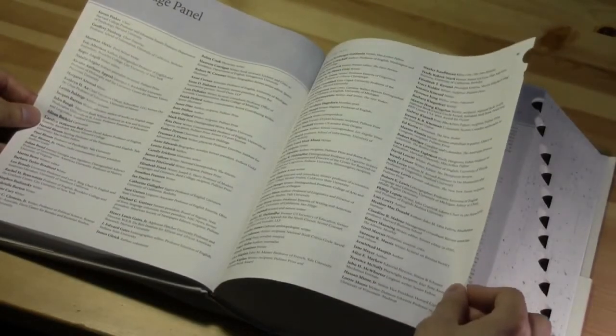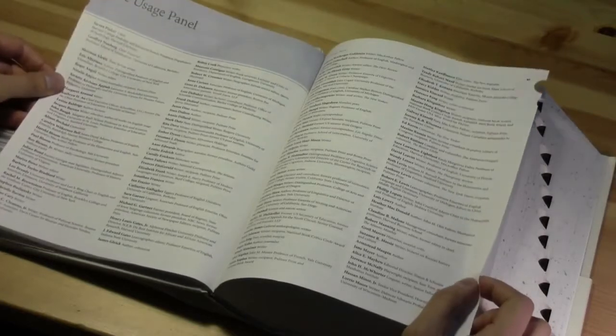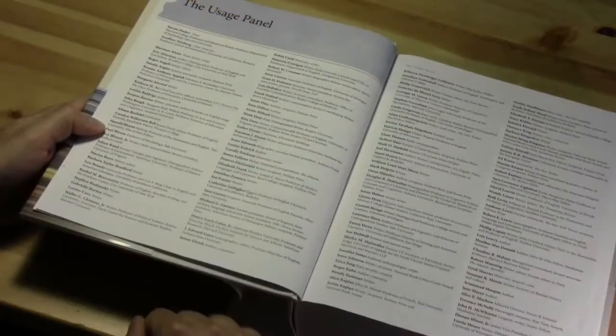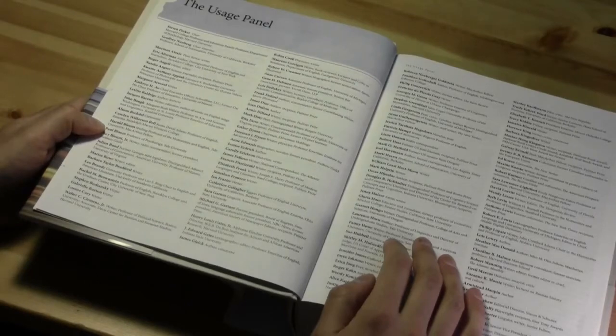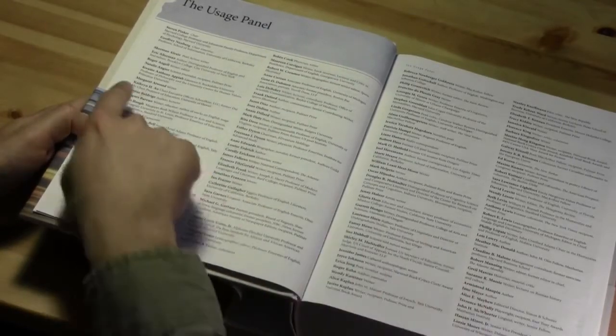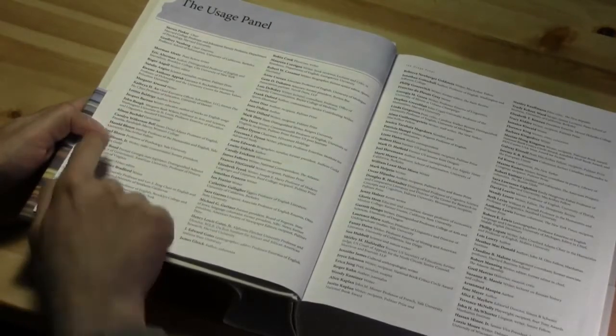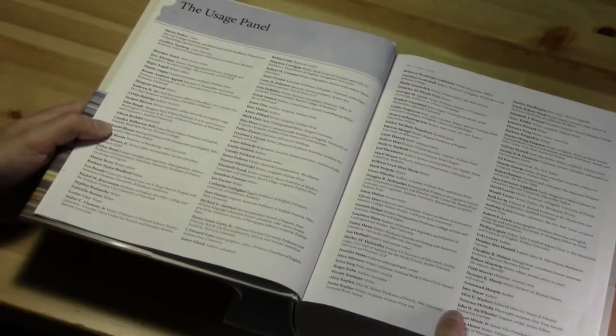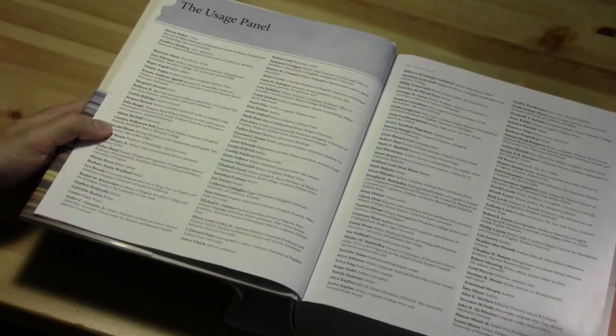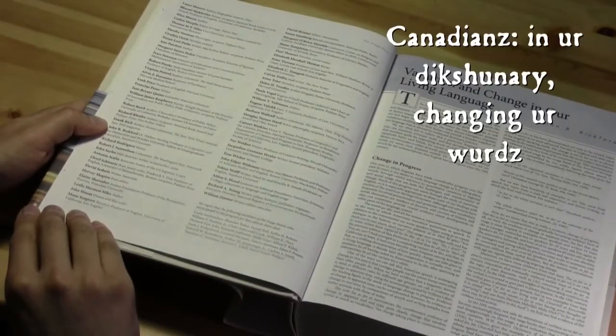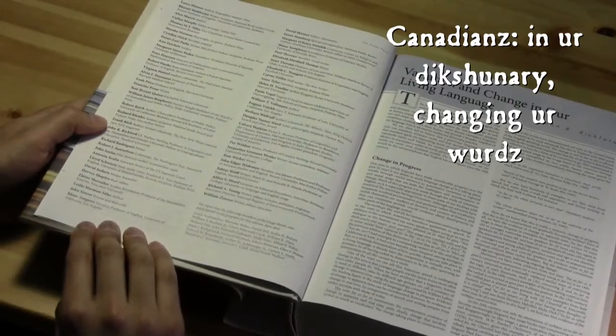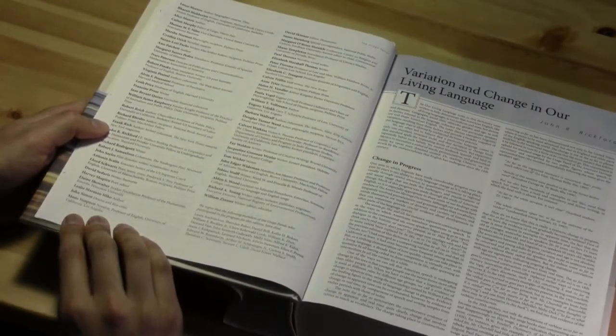And then here's the usage panel, so chaired by cognitive scientist Steven Pinker. So let's look at some of the interesting names on the usage panel here, just sort of scrolling through. Well, a Canadian, Margaret Atwood, Canadian writer. We have Alison Bechdel, here's John McWhorter, linguist, Alice Munro, another Canadian fiction writer. There's Antonin Scalia, Justice of the U.S. Supreme Court. So there's the conservative end of language use, I guess.